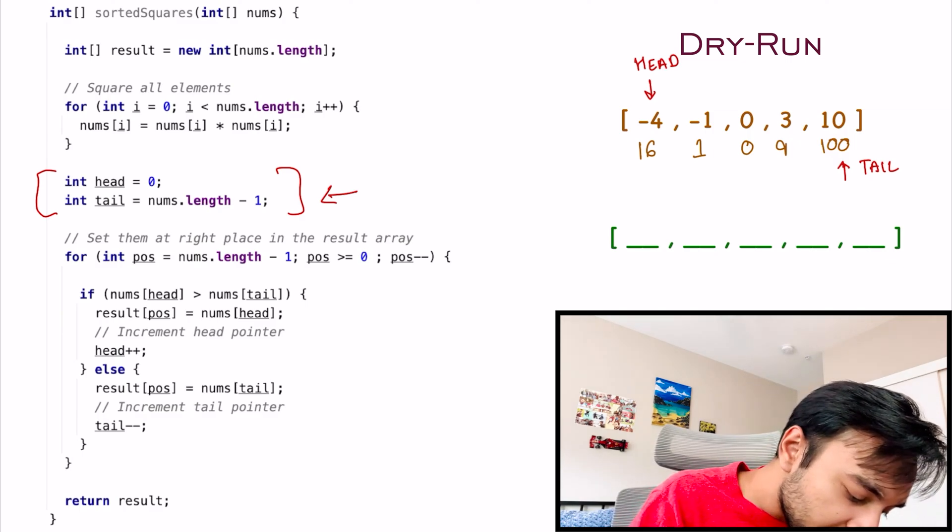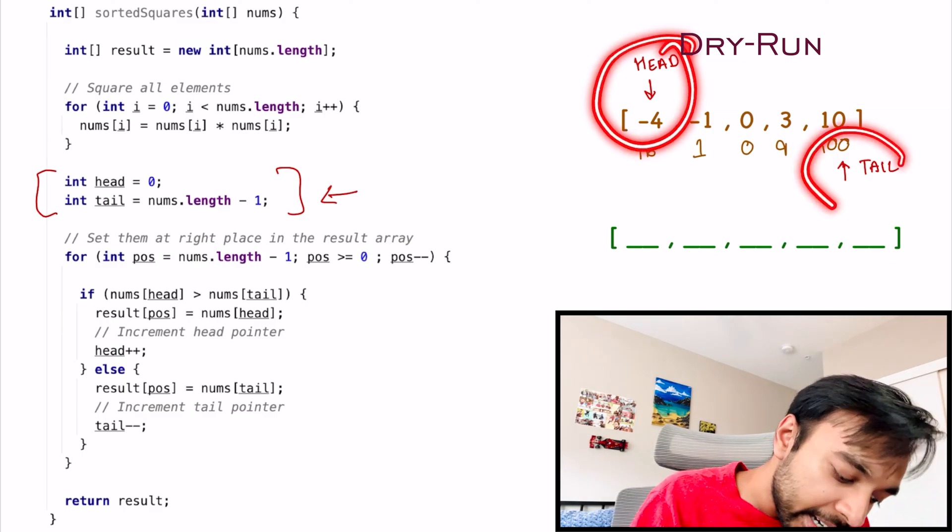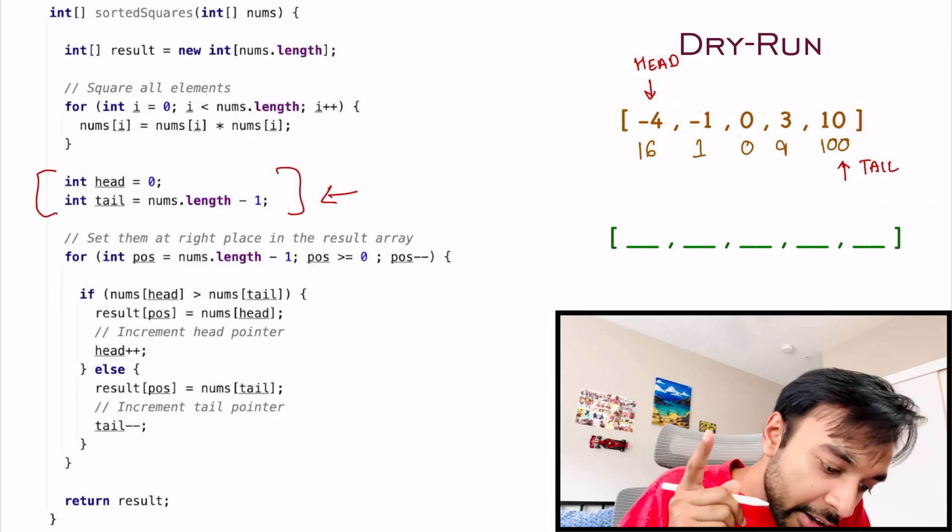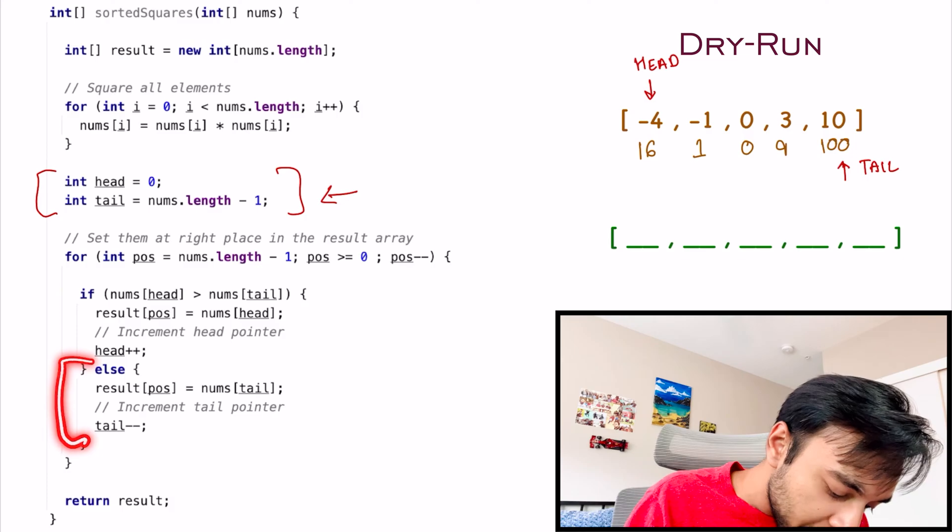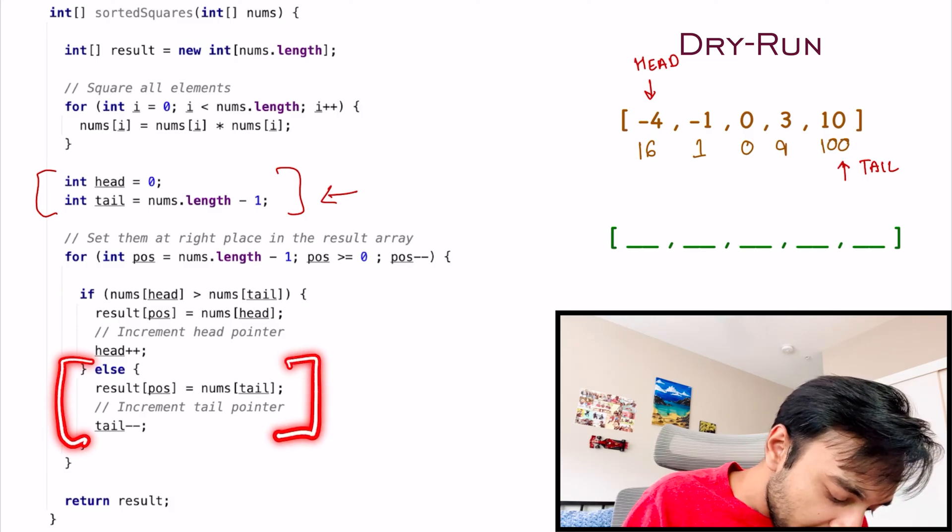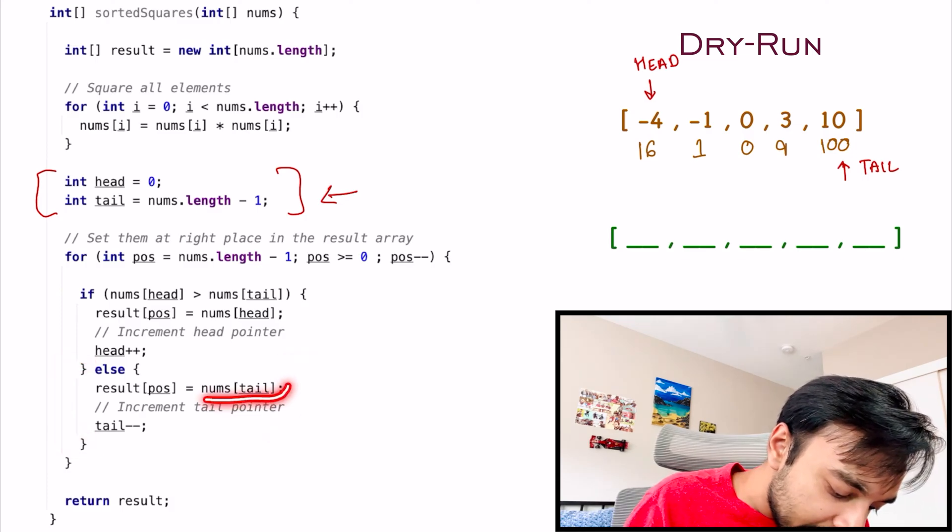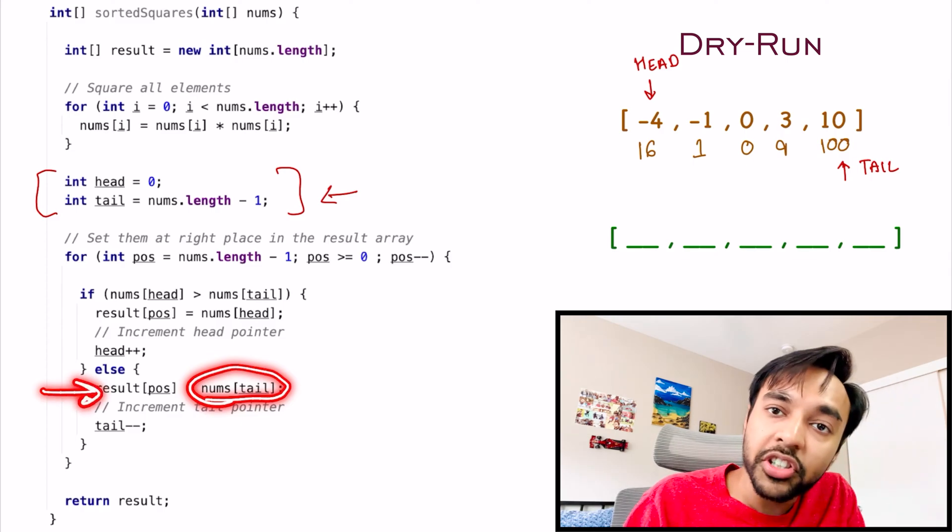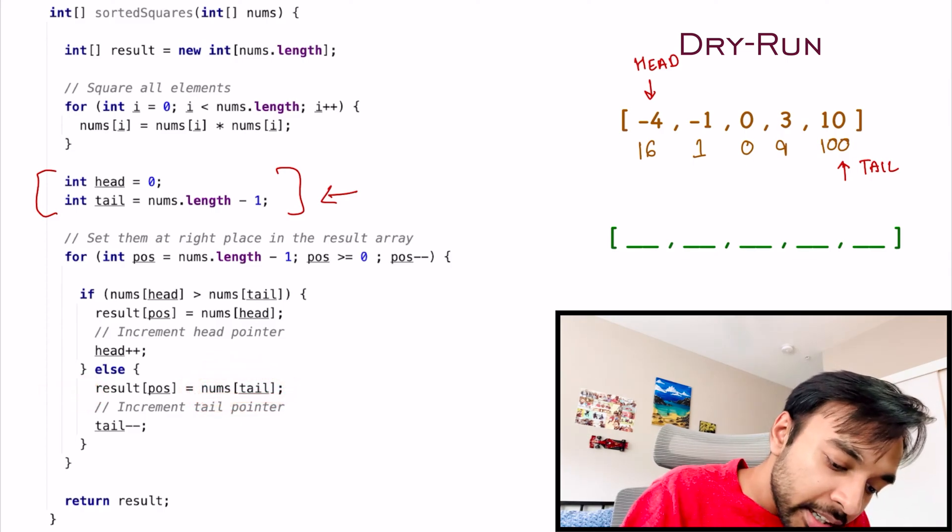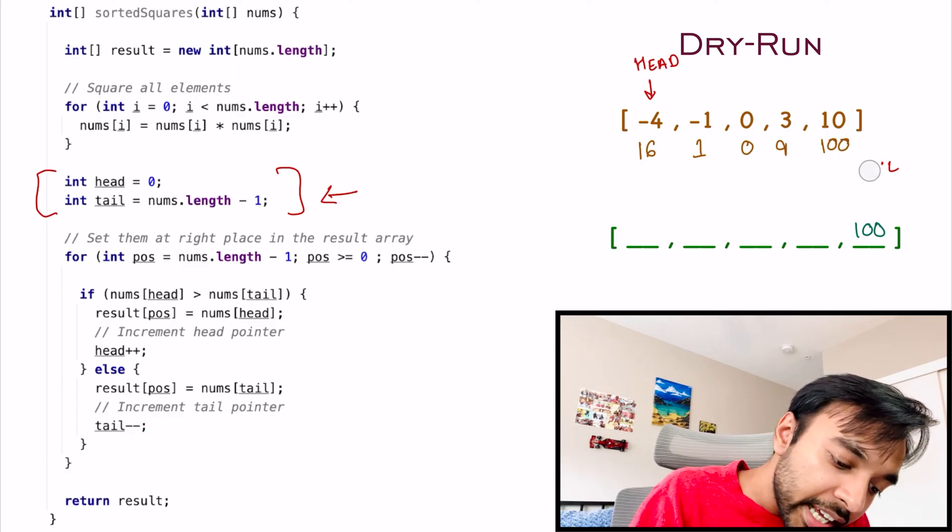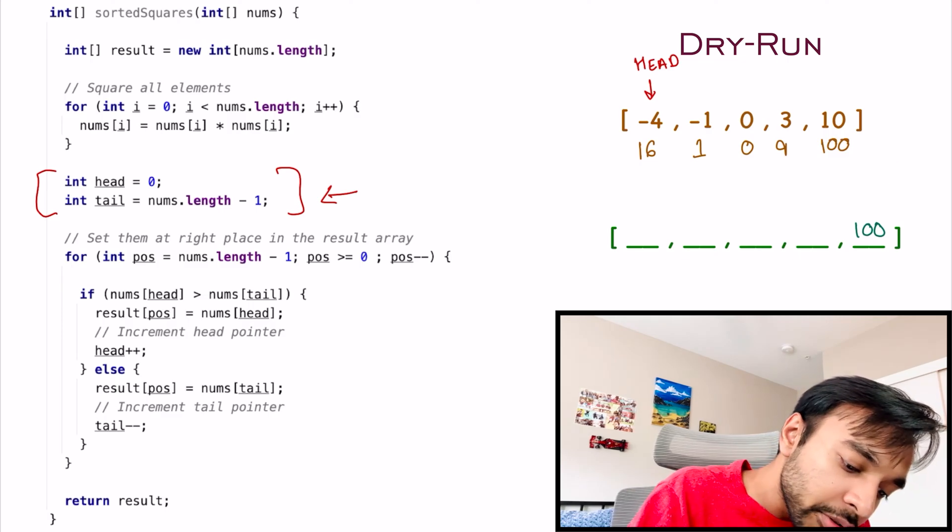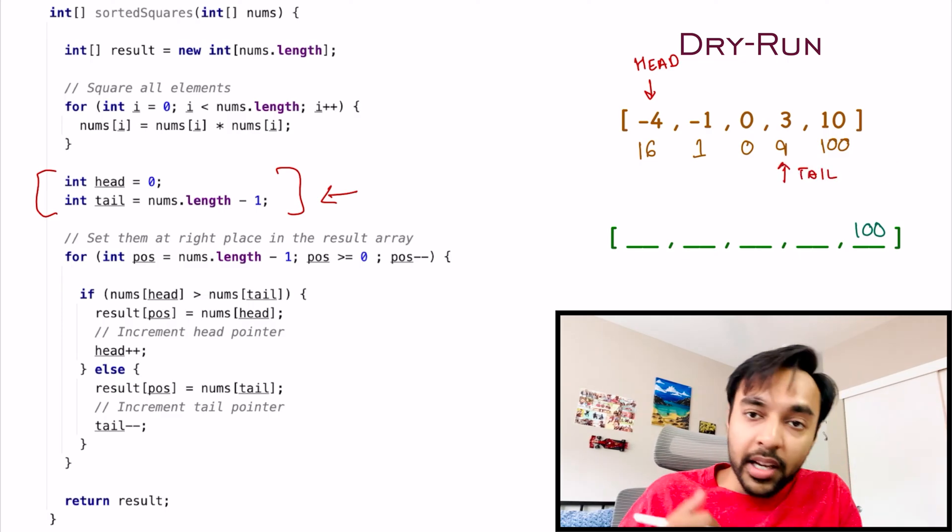Now, what I am going to do is, I will compare this head and tail. We know that 100 is greater than 16. So, what do I do? I will land in my else condition and I will assign this tail number to the last position. Once I do that, 100 gets assigned at the last position and then what do I do? I do a tail minus minus. This will move the tail pointer from the last position to the second last position.